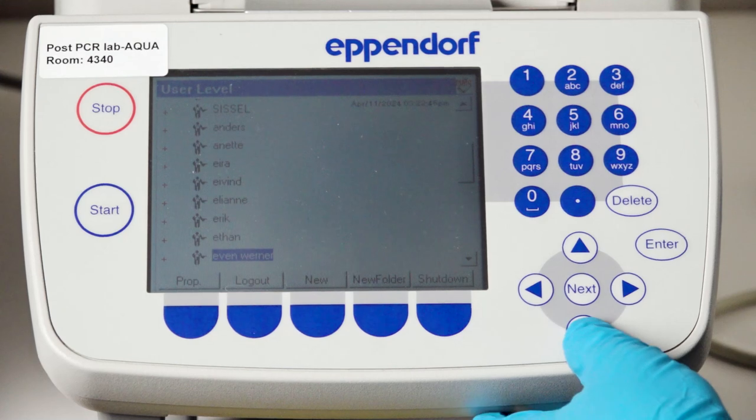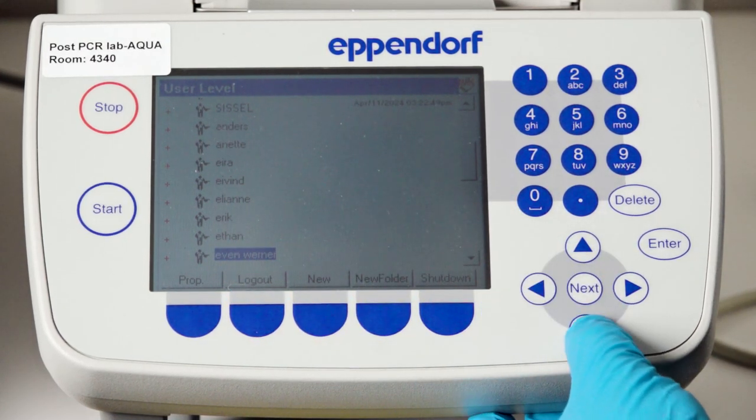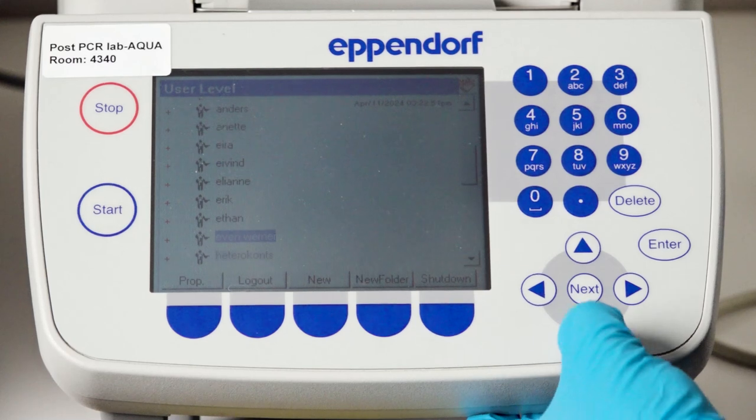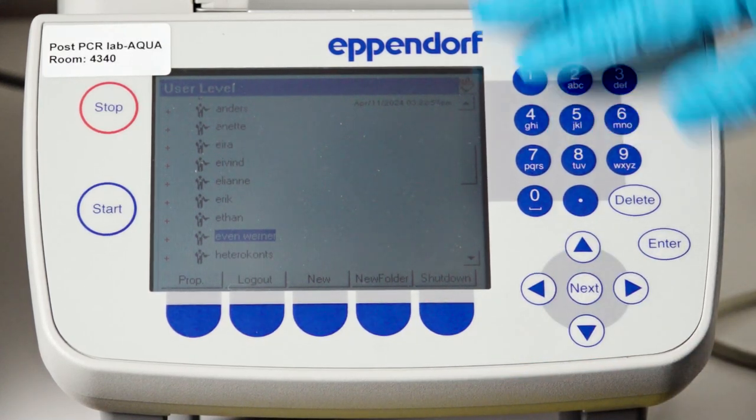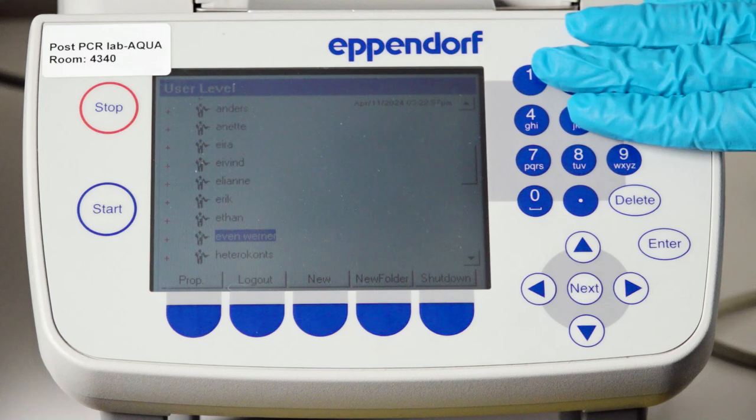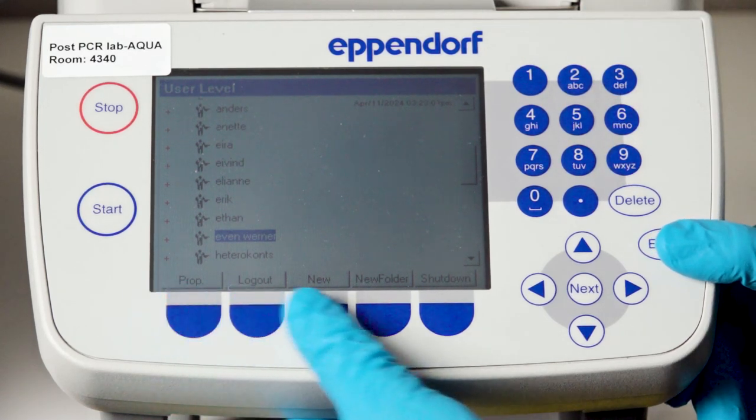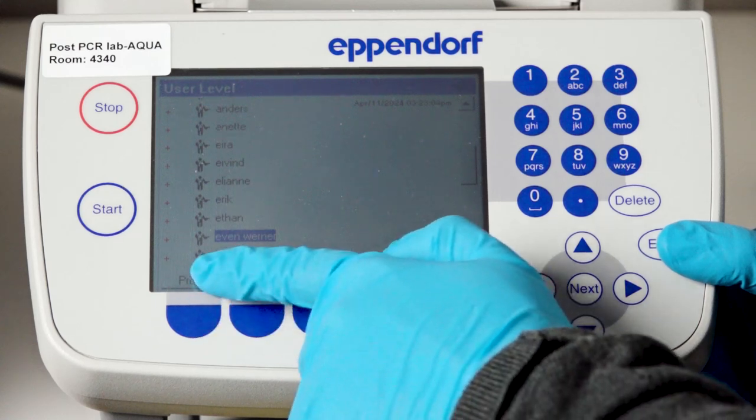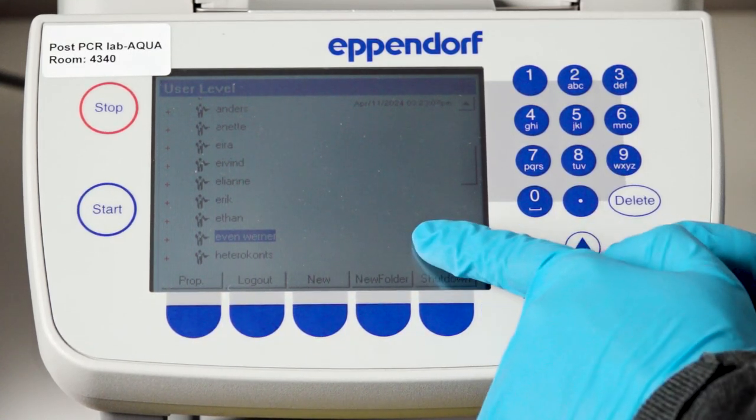Here you see that I'm already selected to my folder. To move around we use the arrows, or if you need to write something we use the keypad over here. For selecting it's enter, but we also have buttons here that correspond to the given menu or options just above it.